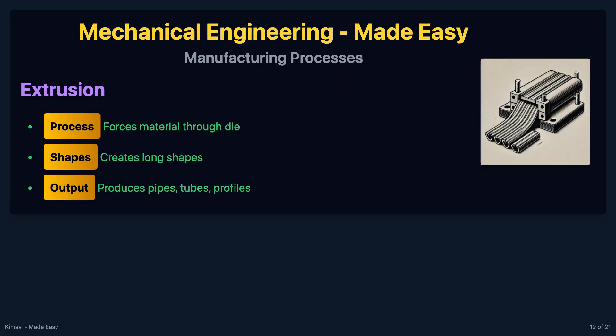Extrusion involves forcing material through a die to create long shapes with a constant cross-section. It is used for producing pipes, tubes, and profiles.